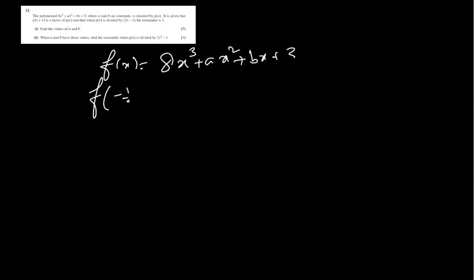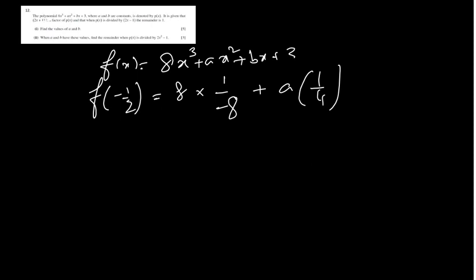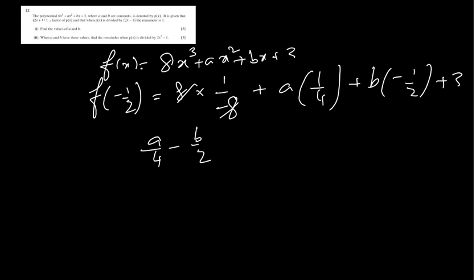You try f of minus one-half, because the factor is 2x plus 1. So you get 8 into minus one-eighth plus a into one-quarter plus b into minus one-half plus 3. This gets cancelled, so you will have a over 4 minus b over 2. That equals minus 2. This is equation number 1.